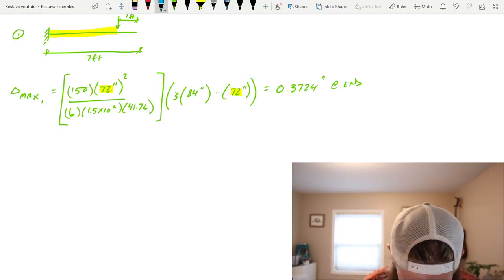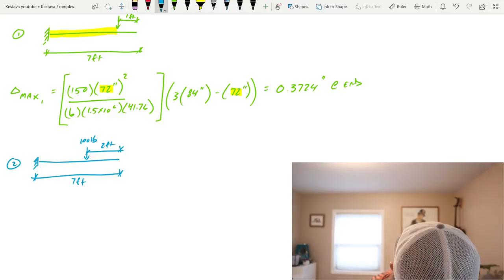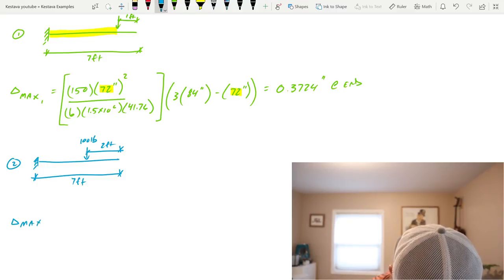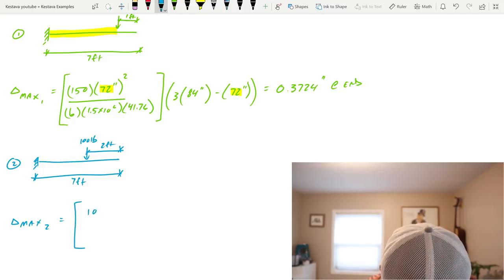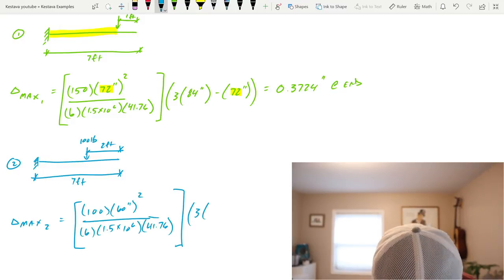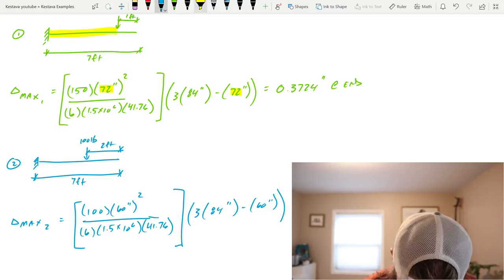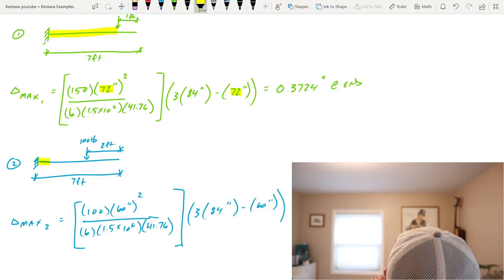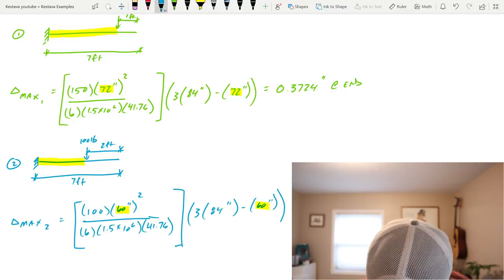Now I'll go blue. Our next scenario, which is two is the following. So now our max deflection, we'll call it delta max two is equal. Same equation, except now P is 100 pounds. The distance is only 60 inches squared over six times E times I three times 84 because 84 is still the full length of the cantilever minus 60 inches again. And this distance is this number here and this number here. That gets us a total deflection of 0.1824 inches at end.